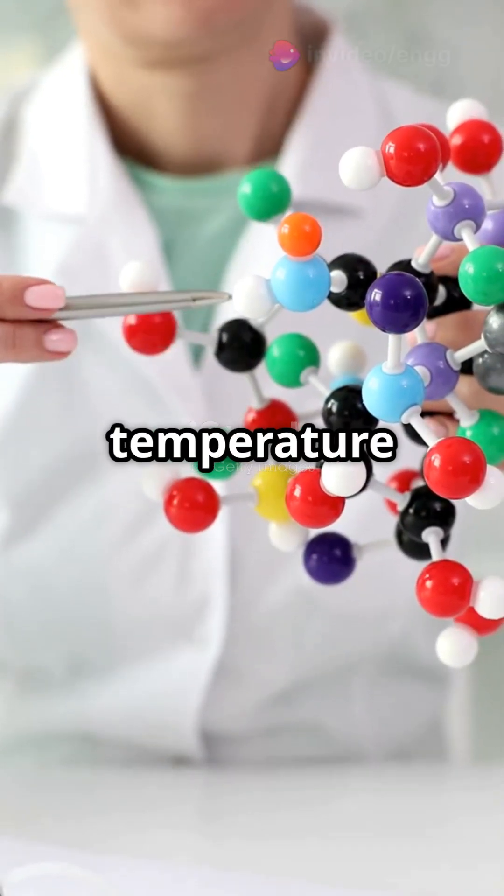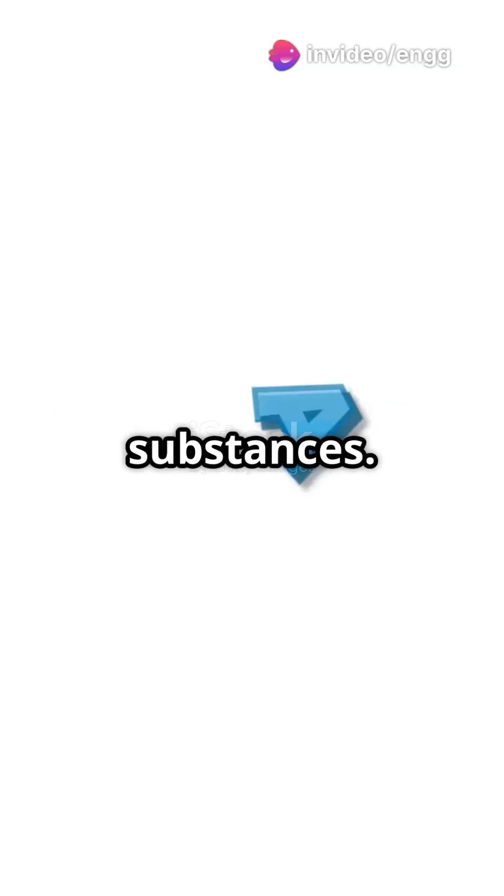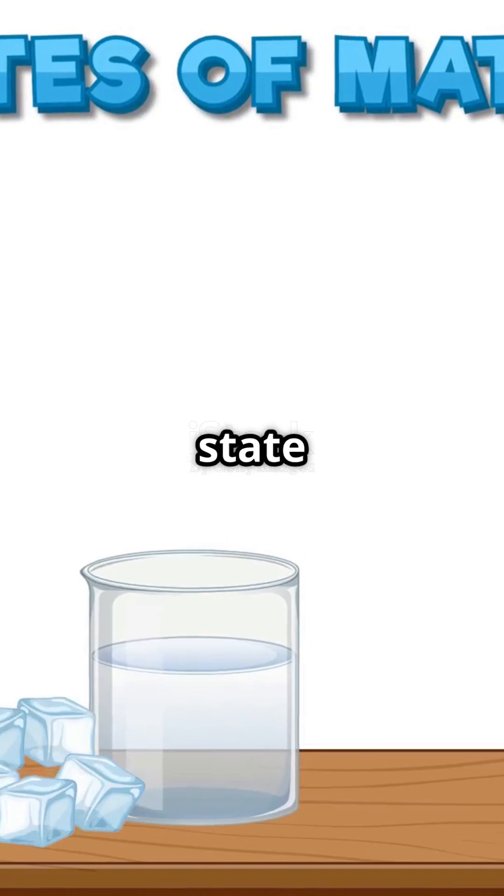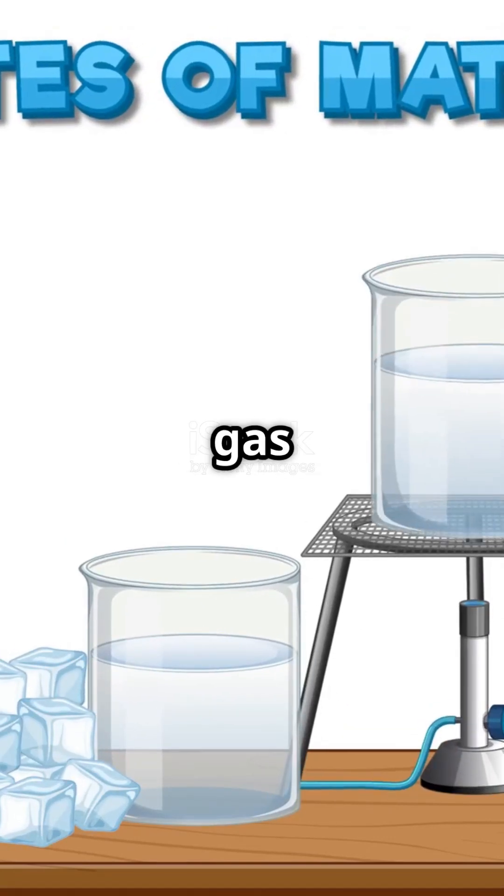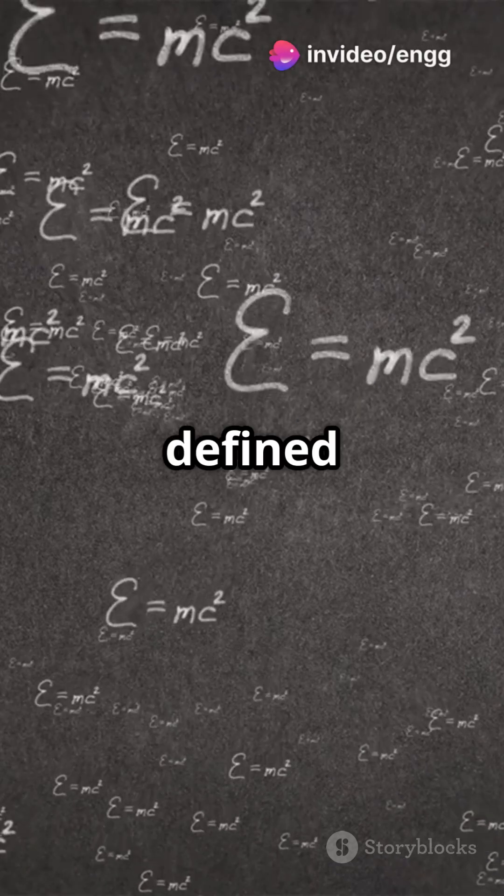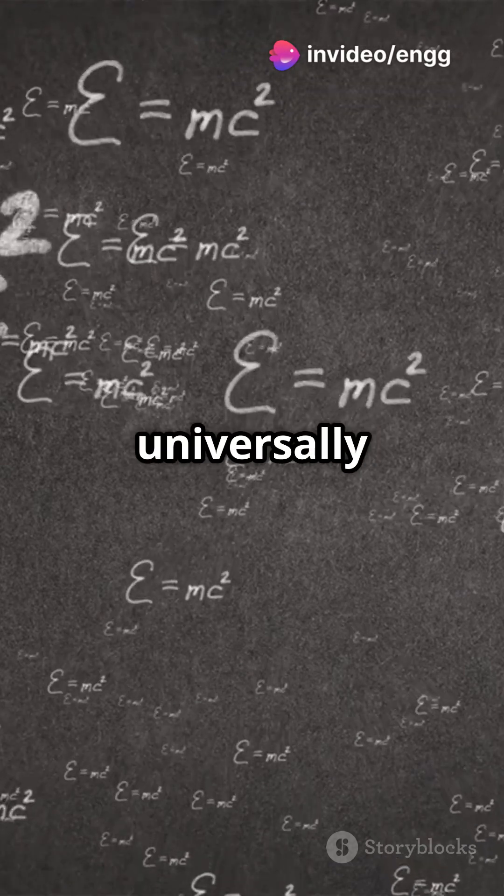This isn't just any temperature scale, it's based on fundamental thermodynamics, not the properties of specific substances. Historically, the Kelvin was defined using the triple point of water, a special state where water can be solid, liquid, and gas all at once. But in 2019 it got an upgrade, now it's defined by the Boltzmann constant, linking temperature to energy in a way that's universally consistent.